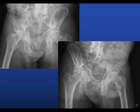Here are our Judet views — iliac oblique on the top left and the obturator oblique down here. On the obturator oblique, you can see a tremendous protrusio and significant involvement of that quadrilateral plate; the anterior column is disrupted. Not good.